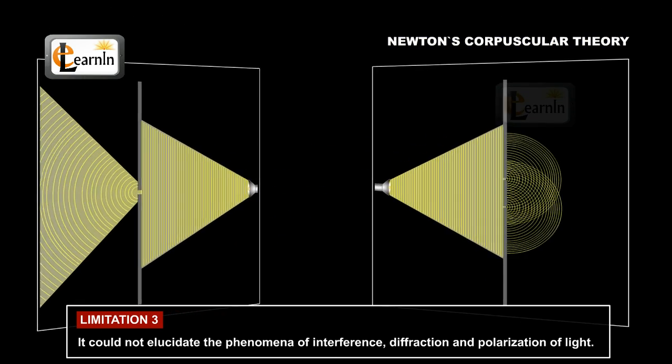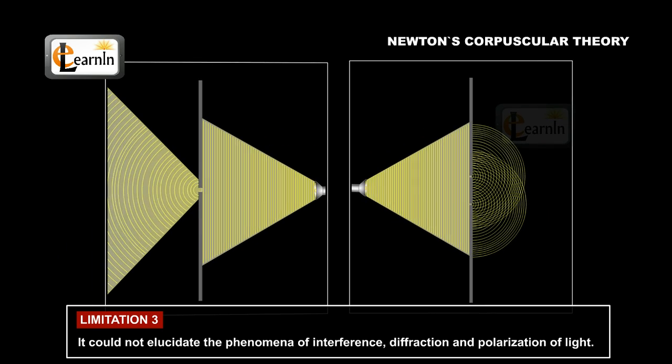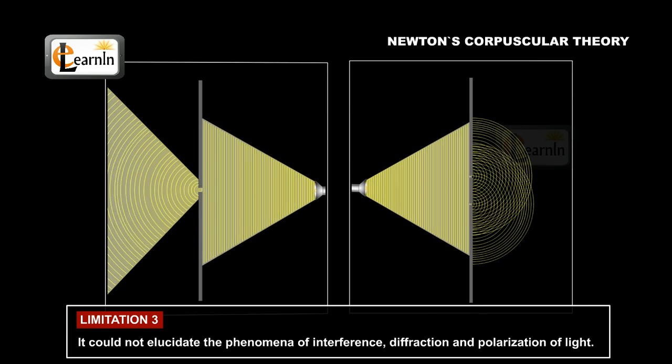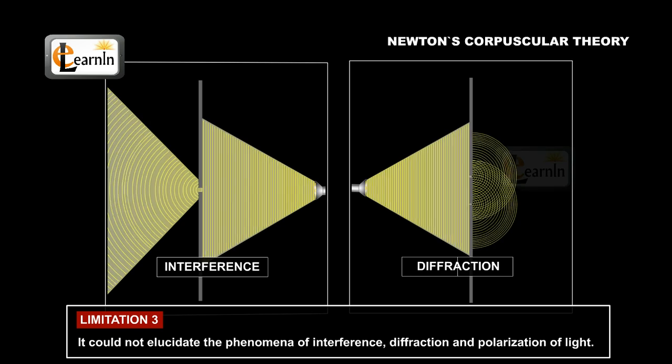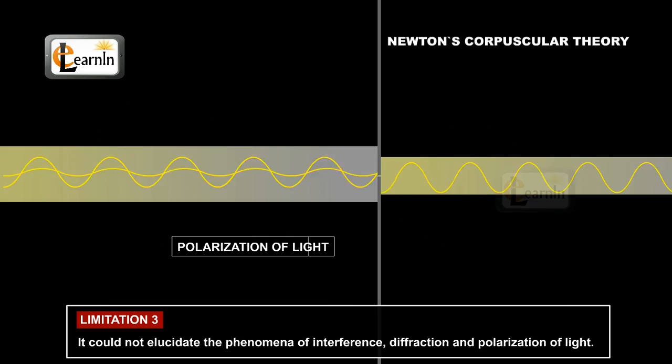The biggest limitation of Newton's corpuscular theory of light was that it could not illuminate the phenomena of interference, diffraction, polarization, and polarization of light.